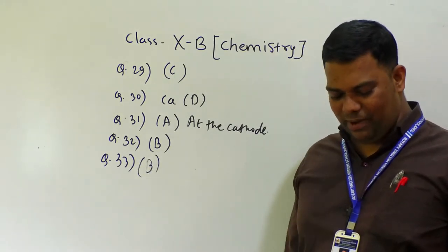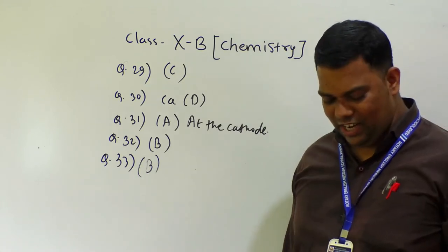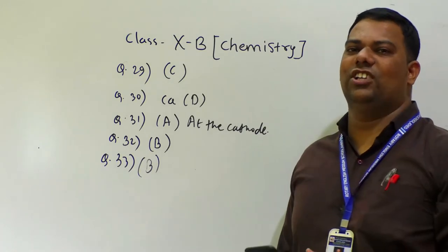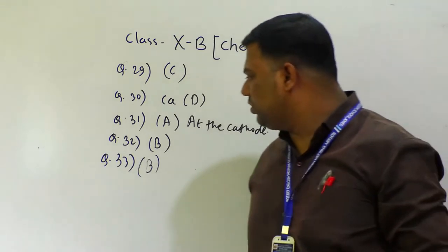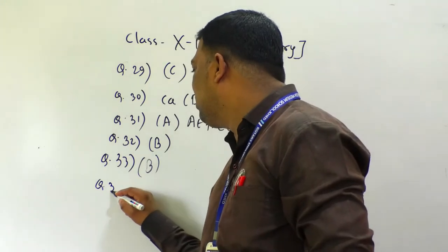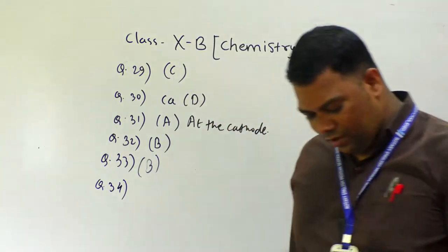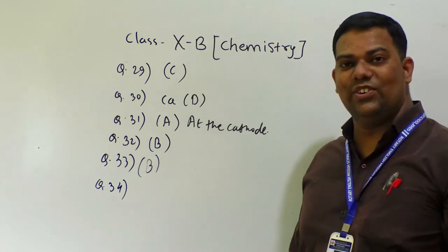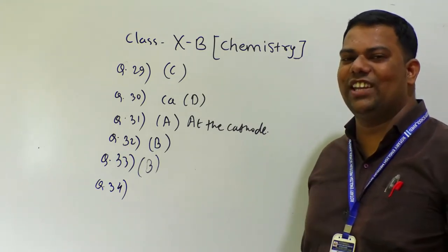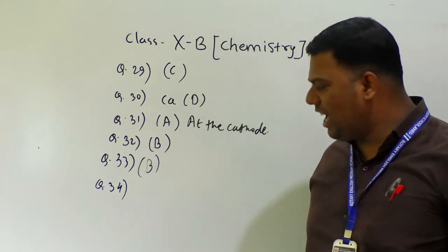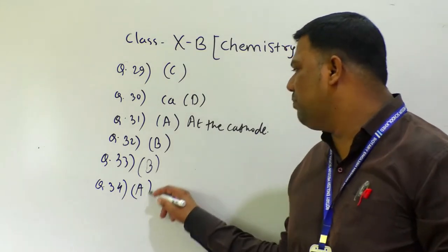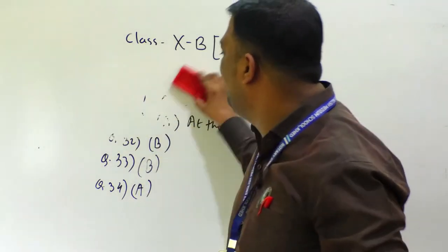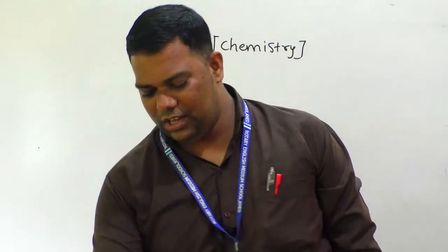Neutralization of an acid solution by base happens easily, and evaporation of water you observe many times. Question number 34: copper surface loses its lustre due to what? As we discussed in our content part, it is due to the formation of basic carbonates. The answer is option A.